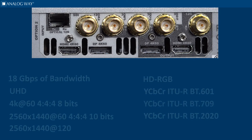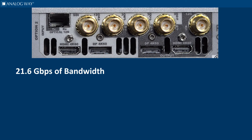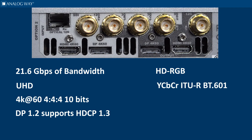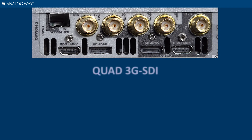DisplayPort 1.2 supports up to 21.6 gigabytes per second of bandwidth, allowing resolutions up to UHD 4K at 60Hz 4:4:4 10-bit. DP 1.2 is compliant with HDCP 1.3 and supports RGB 444 YCBCR ITU-R BT.601 and BT.709.